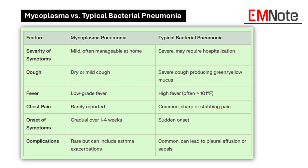Understanding these subtle symptom differences can be really invaluable. Recognizing that a patient with a dry cough and no chest pain is much less likely to have serious bacterial pneumonia can really help in the initial diagnostic approach and in determining the urgency of treatment. The onset of symptoms is a big one too. Mycoplasma pneumonia is kind of sneaky — it develops gradually over one to four weeks — while typical pneumonia tends to have a much more sudden onset, often knocking patients off their feet within a day or two.